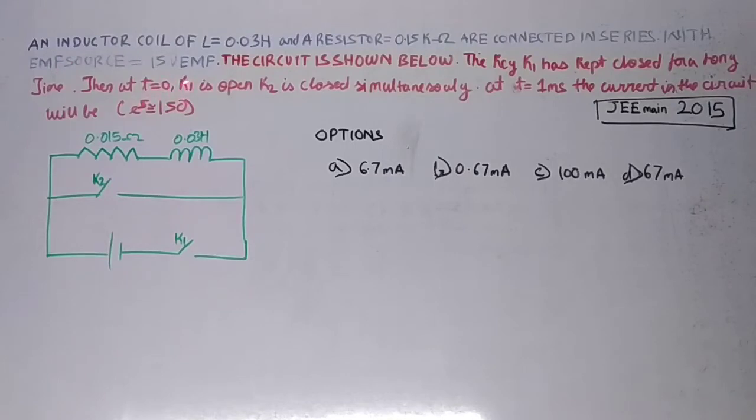Then at time T equals 0, K1 is opened and K2 is closed simultaneously. So when we begin our experiment, at the same time K1 is kept open and K2 is closed.